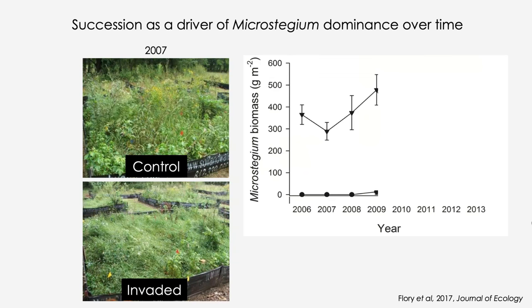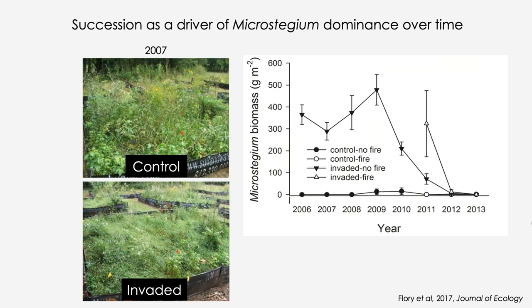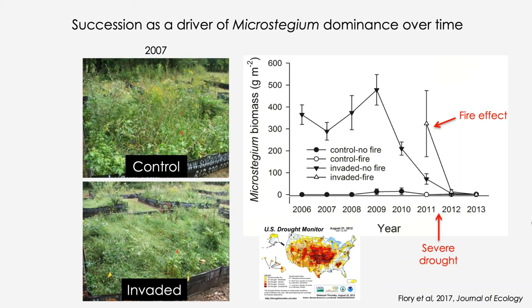However, after the first four years the pattern in Microstegium abundance changed quite dramatically. We saw a population crash — by 2012-2013 it was essentially gone from the invaded plots. We added fire in spring 2011 and 2012 thinking there might be a positive feedback, and temporarily saw a boost in population size in burned areas. One contributing factor for the decline was the severe Midwest drought in 2012, but clearly there was a major decline well before that 2012 growing season drought.